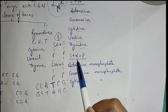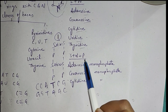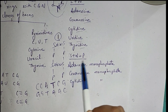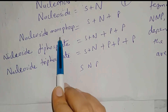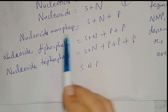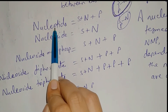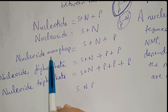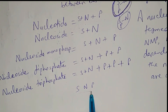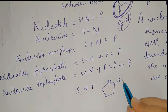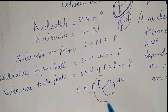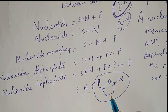When a sugar molecule combines with a nitrogenous base and a phosphate molecule also joins, that three-molecule compound is called a nucleotide. The first term is nucleoside monophosphate: nucleoside means SN, and monophosphate means a single phosphate is present. So a nucleotide with one phosphate can be called nucleoside monophosphate — it is SNP: sugar, one nitrogenous base, and one phosphate.